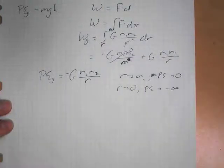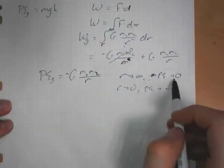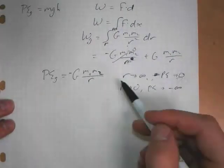So potential energy, as we move further from the Earth, potential energy is getting closer to zero, but it's negative. So as we move further from the Earth, potential energy is increasing.